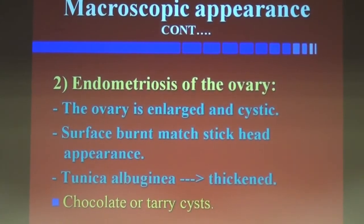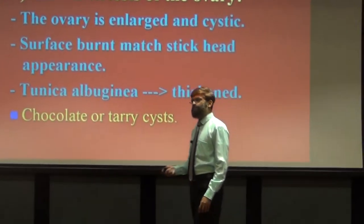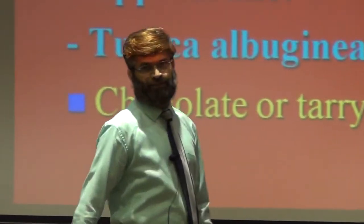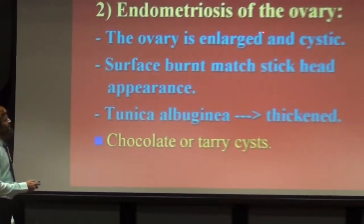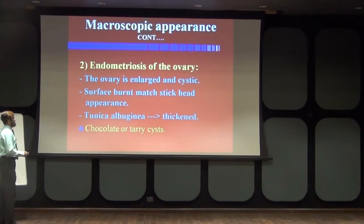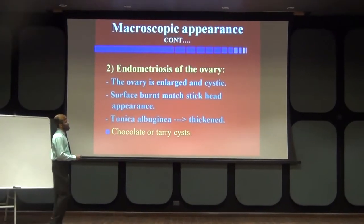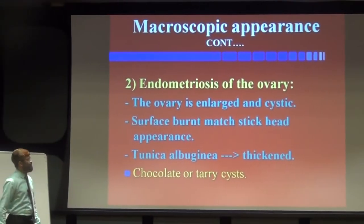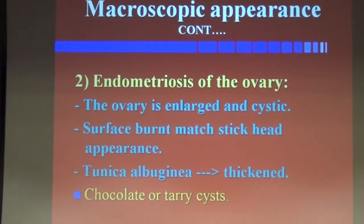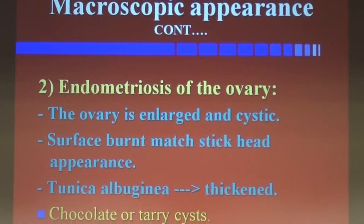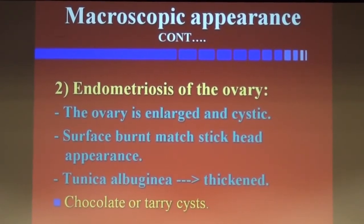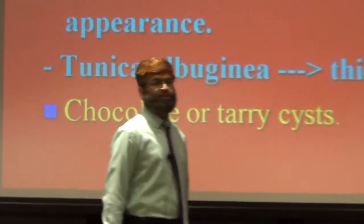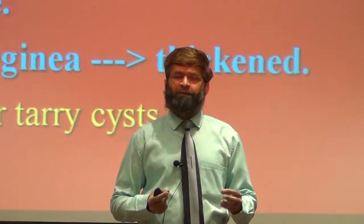Next is the macroscopic appearance of endometriosis externa. The most important site for endometriosis externa is the ovaries. The ovaries enlarge and become cystic. On laparoscopic view, there may be observation of powder burns — a mastic head or matchstick head kind of appearance. The tunica albuginea will be thickened. The most important finding is what we call chocolate cyst ovaries. On laparoscopic view, there will be hematogenous spread with the presence of hemosiderin granules as well as blood — and we call that chocolate cyst ovaries.